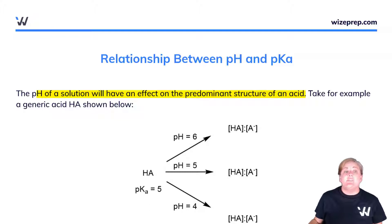Let's take, for example, this generic acid shown below. So if I have HA here with a pKa of 5,